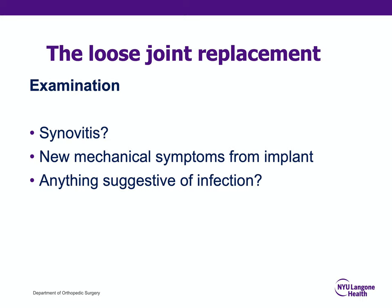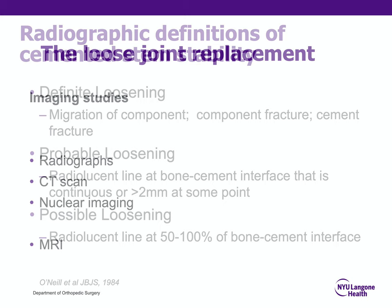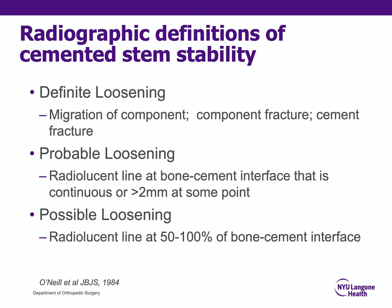Does the narrative describe a patient with new mechanical symptoms that were not there from the beginning? Always consider whether anything suggests infection. Plain radiographs are always indicated, and CT scan, nuclear imaging, and MRI may be indicated depending on the situation. If you see migration of a component, a component fracture, or a cement fracture, that is an implant that is definitely loose. A continuous radiolucent line greater than two millimeters in some area is probably loose, and one around about half of the implant is possibly loose.